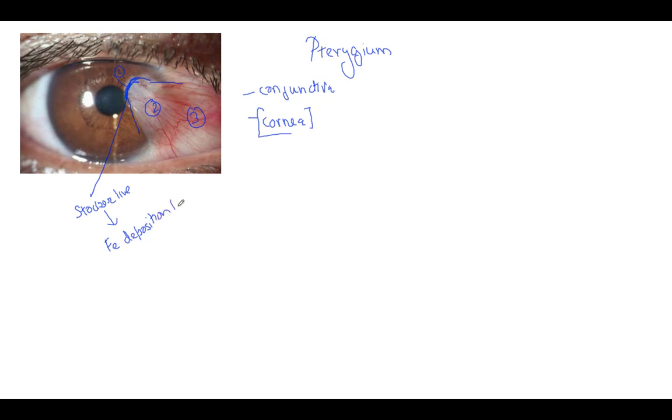Then you have to remember that it is a degenerative elastotic degeneration of the stromal tissue of the conjunctiva.